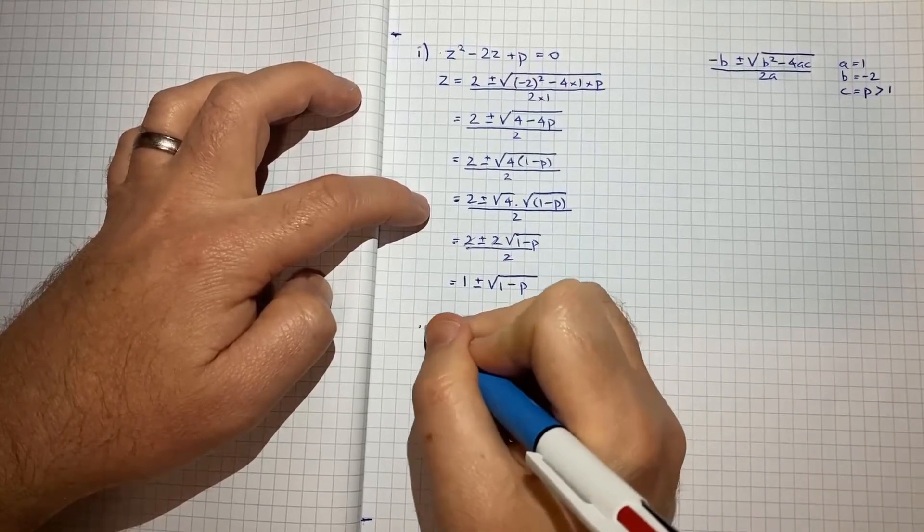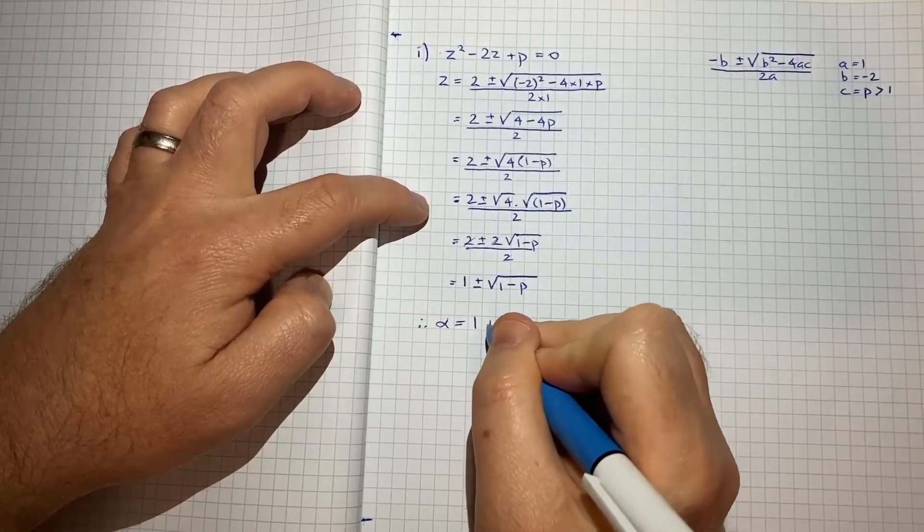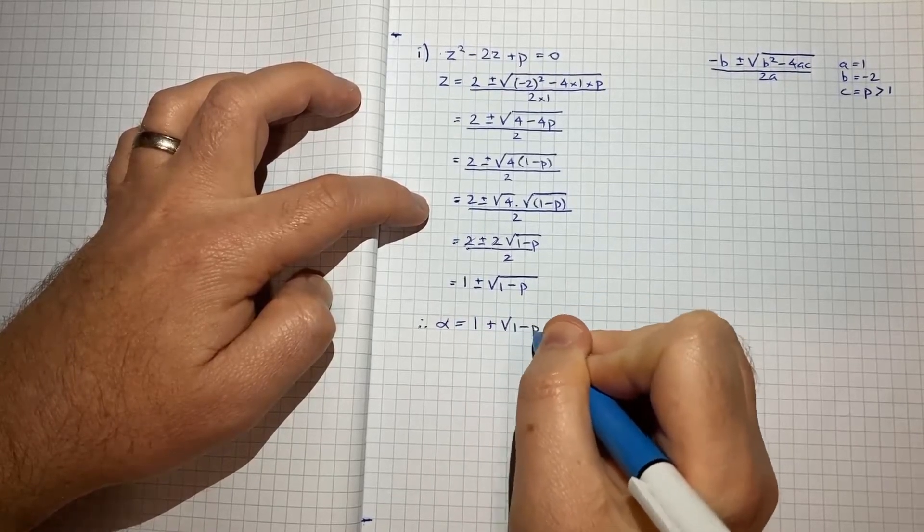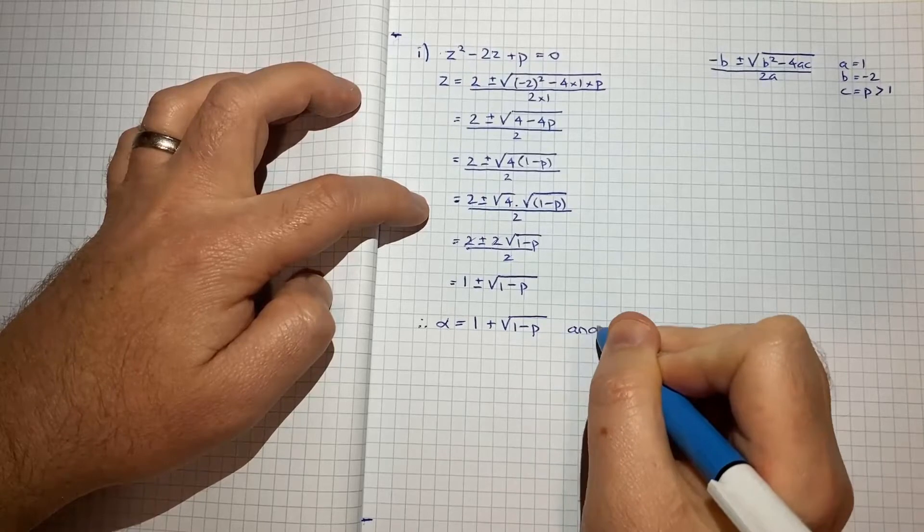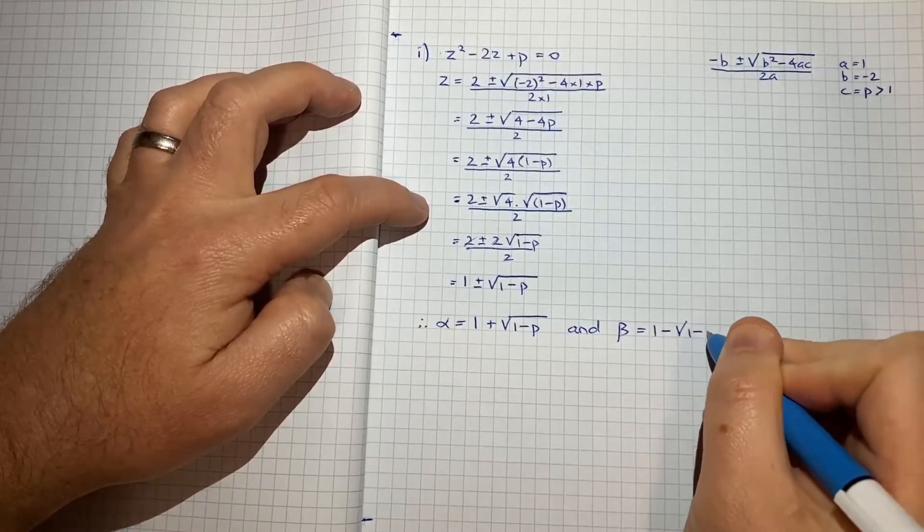So therefore what we're getting is we're getting the roots alpha equals 1 plus the square root of 1 minus p, and we'll get beta equals 1 minus the square root of 1 minus p.